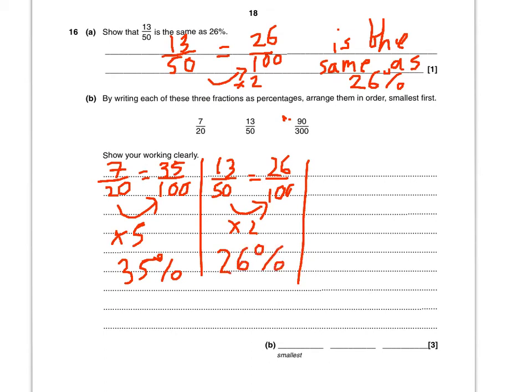And finally, 90 over 300. Well, this time we can't times by a number to get to 100. But you could divide by 3 to get from 300 to 100.